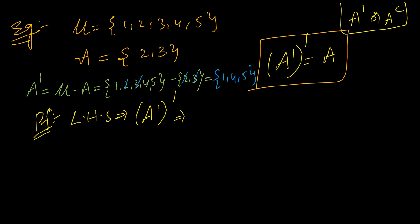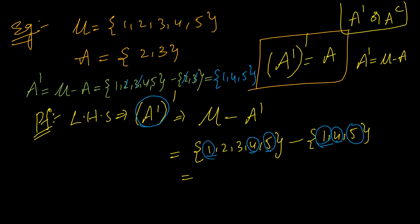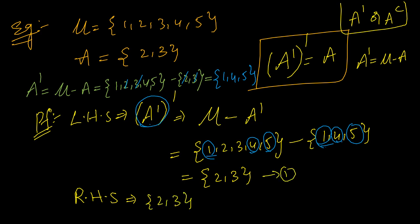We already know A complement is universal set minus A. Now let us assume A complement is our new set. The whole complement will be universal set minus the new set, which is A complement. So universal set {1, 2, 3, 4, 5} minus A complement {1, 4, 5}. We remove the common terms 1, 4, 5 and take leftover terms in the first set, which is {2, 3}. The RHS is simply {2, 3}. From this, LHS equals RHS, which means A complement whole complement is nothing but set A.